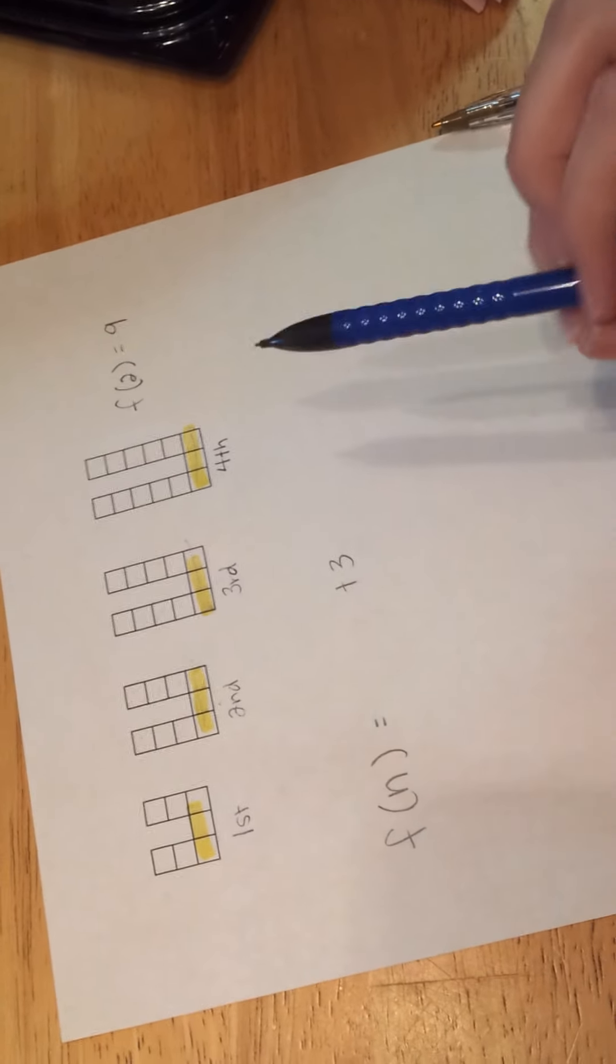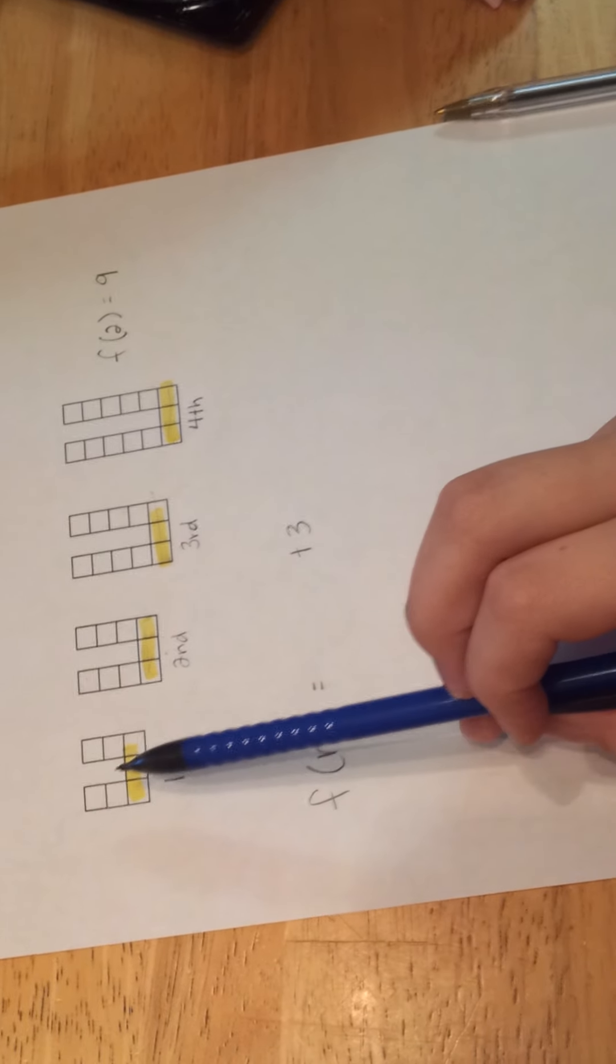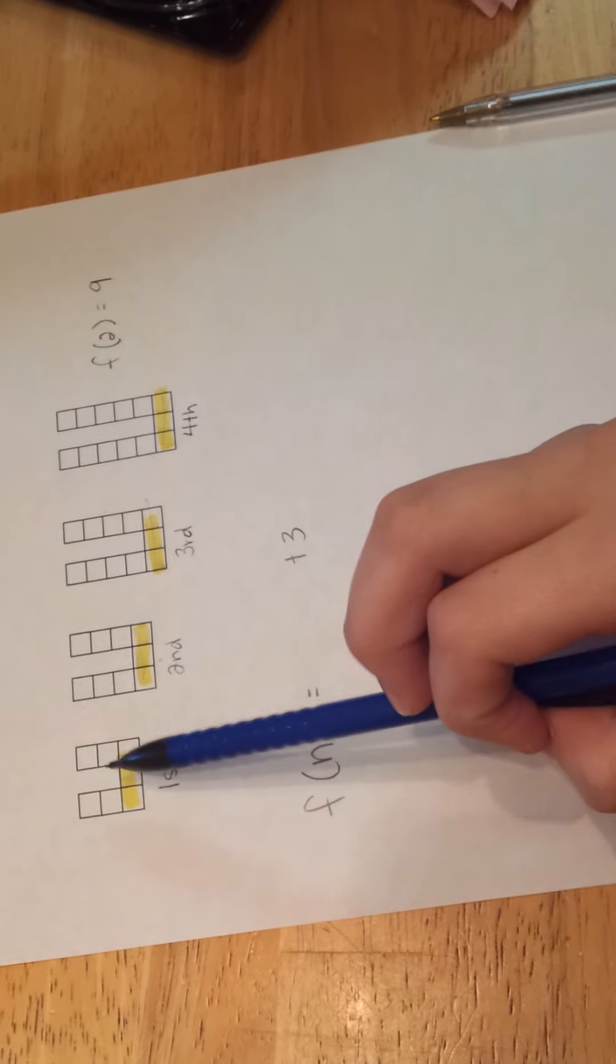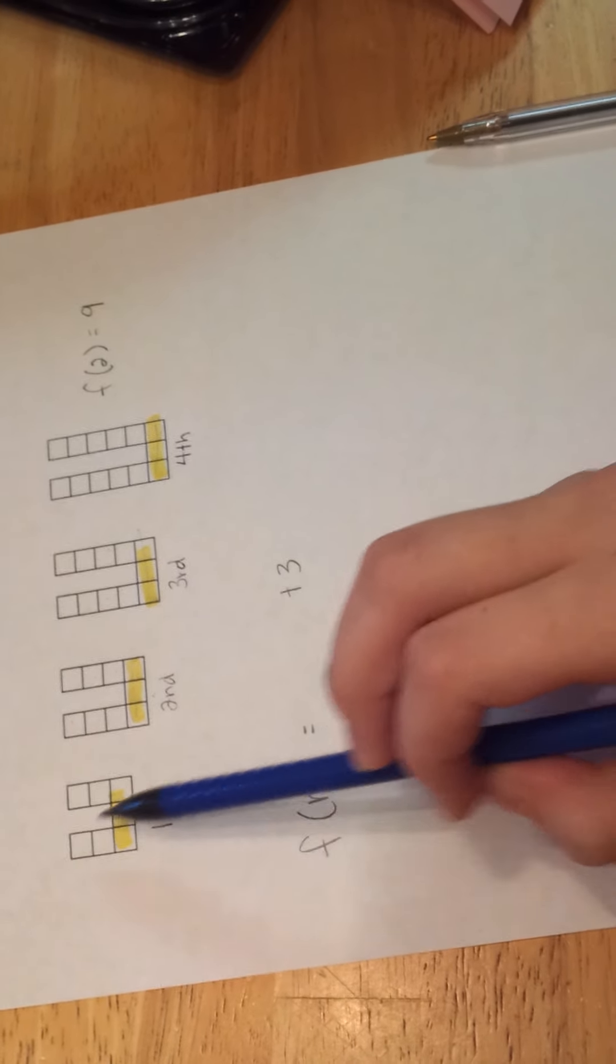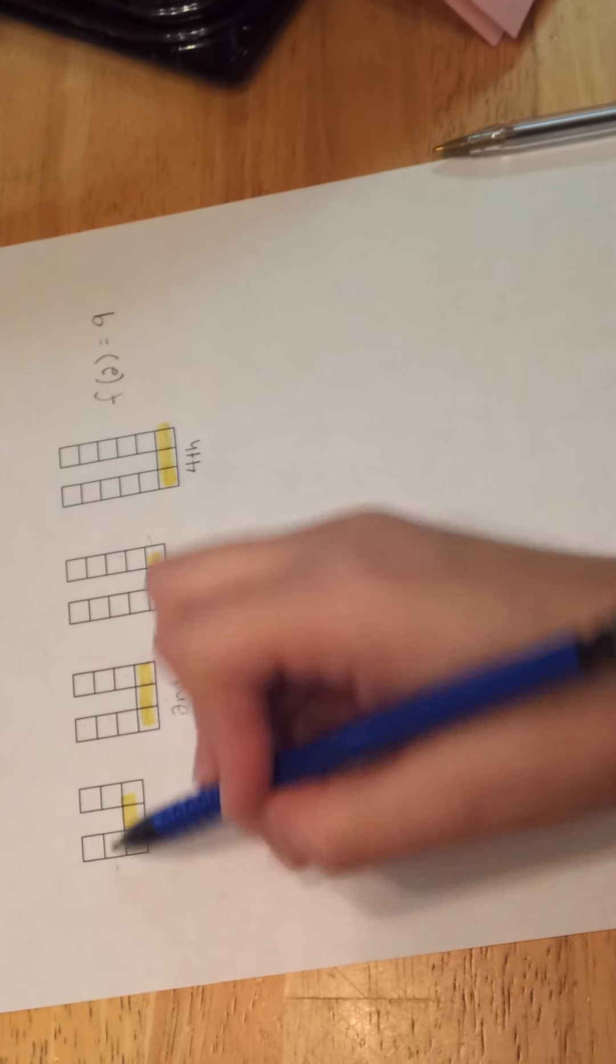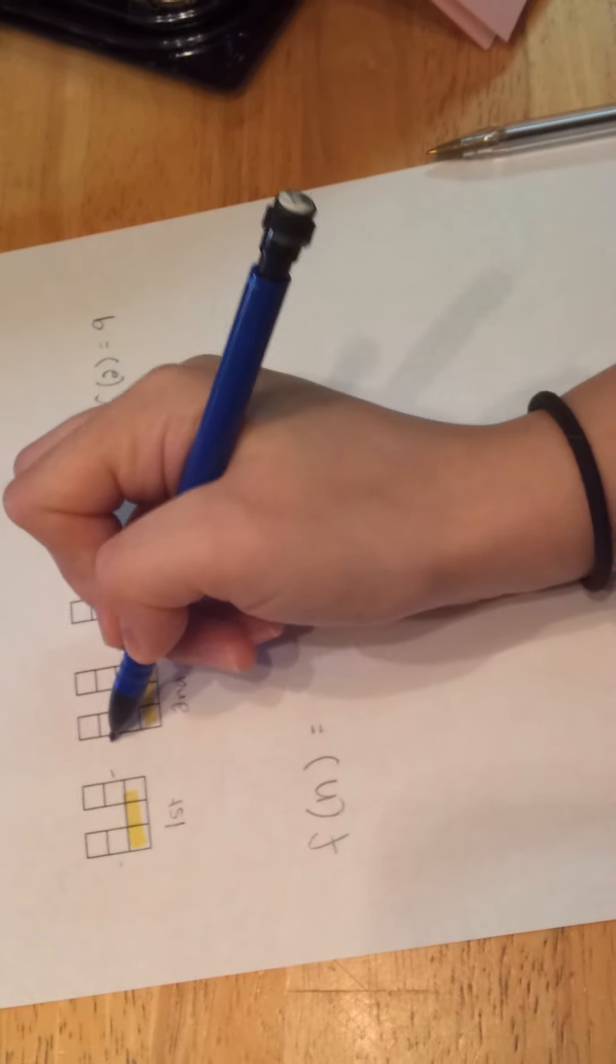We also know that there are 2 legs for each. And I noticed that for each figure, there are 1 square for number 1, 1 square right here, and 1 square right here. For figure 2, there are 2 squares. 1, 2, 1, 2.